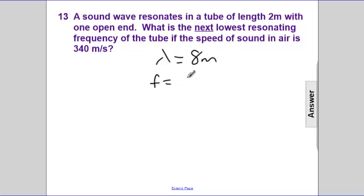And that frequency would have been the velocity divided by the wavelength, 340 meters per second divided by the wavelength, eight meters, which would give us a frequency of 42.5 hertz.